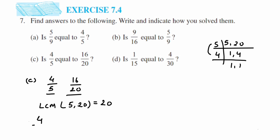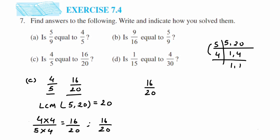For the first number 4/5: to get denominator 20, multiply by 4 — so 4×4 is 16 and 5×4 is 20, giving 16/20. For the second number 16/20, the denominator is already 20, so no change needed. Now we have 16/20 and 16/20 — both numerators and denominators are equal, so the fractions are equal.